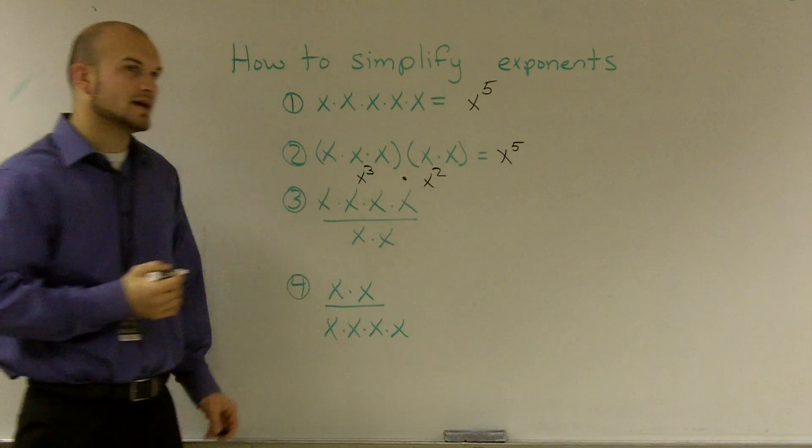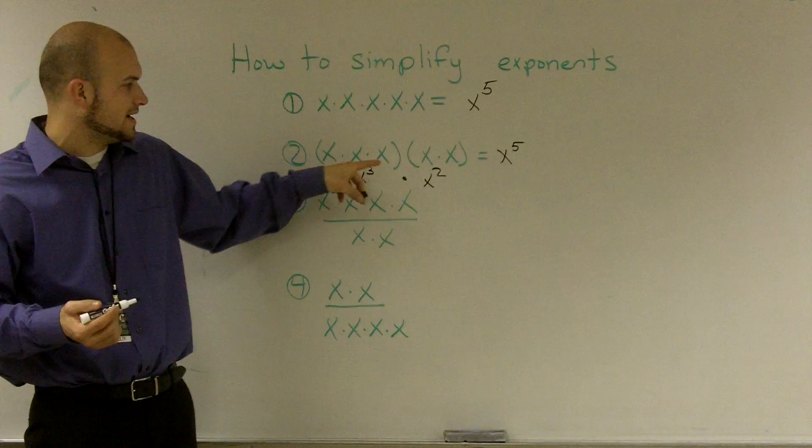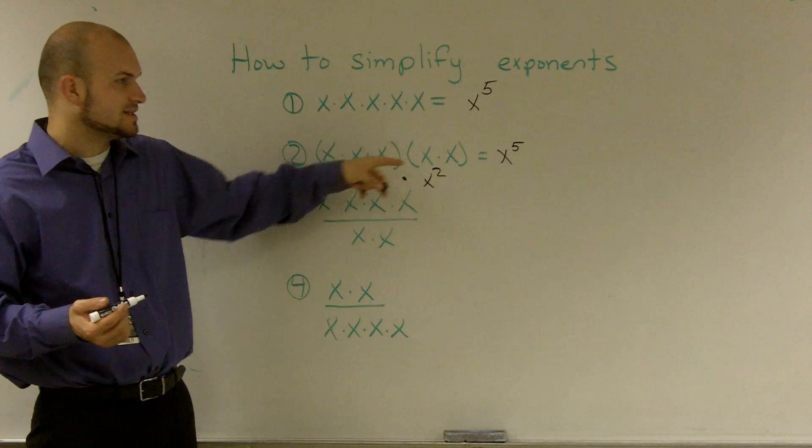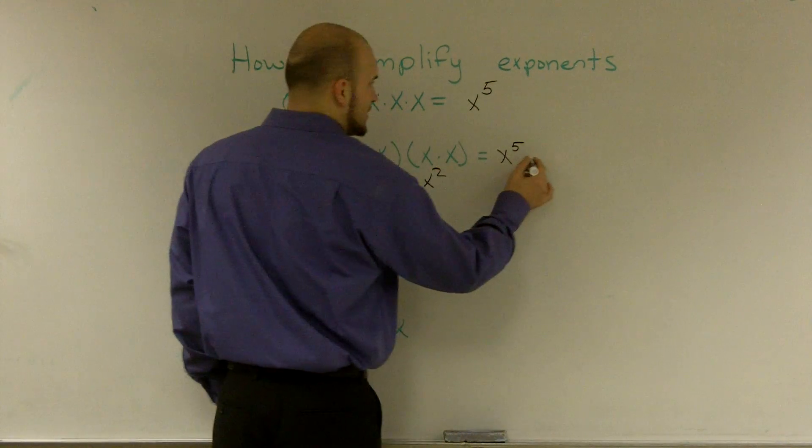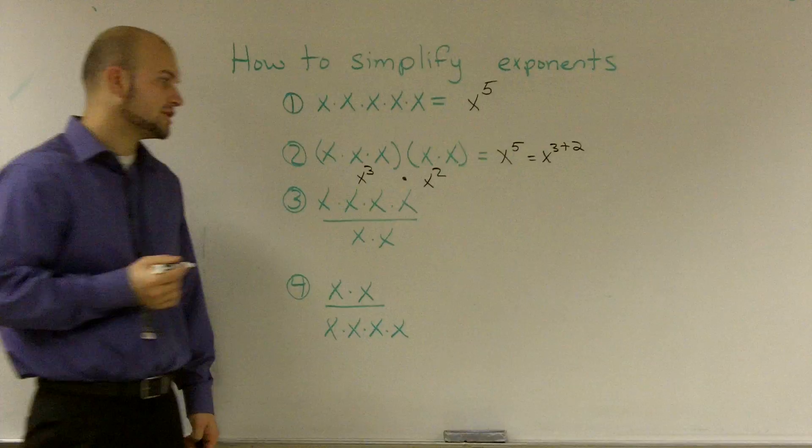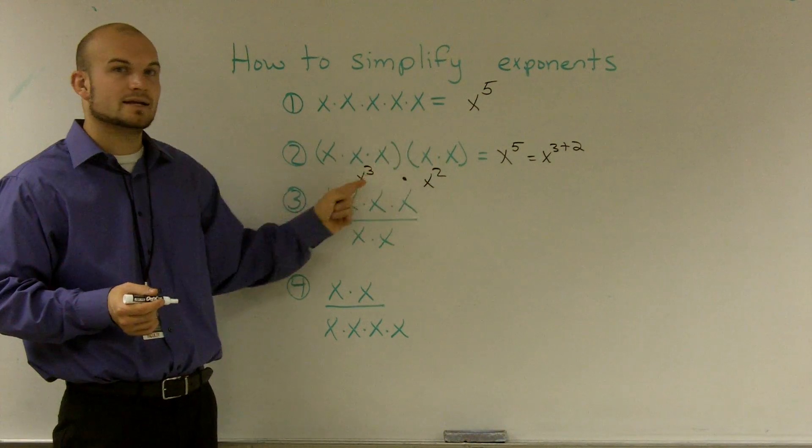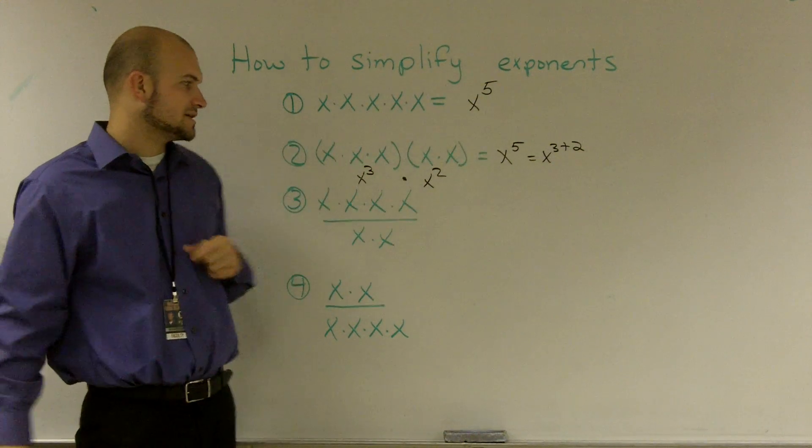So if you look at what you're really doing with your exponents, you're not multiplying three times two. When you multiply the same bases with different exponents, you're actually going to add the exponents. So that really equals x to the third plus two. Those are equivalent. So just remember this: when you multiply bases with exponents, you add the exponents.